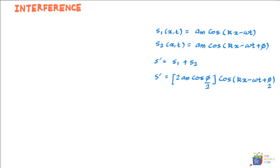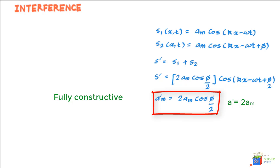s' = [2aₘₐₓ cos(φ/2)] cos(kx - ωt + φ/2). We get another traveling wave with amplitude a'ₘₐₓ = 2aₘ cos(φ/2). Like transverse waves, the value of φ determines the type of interference: whether it is fully destructive so the amplitude becomes zero, fully constructive so the amplitude doubles, or somewhere in between, depending on the value of φ.